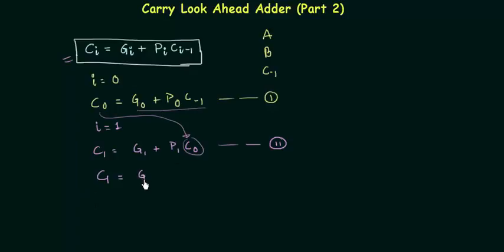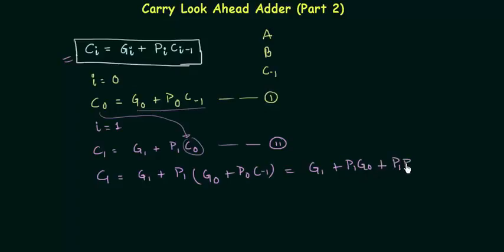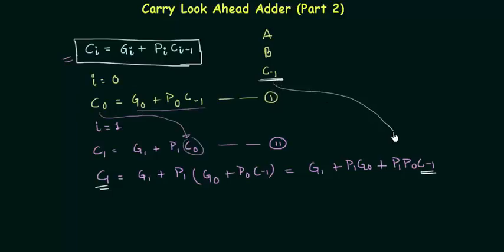Substituting, c1 equals g1 or p1 times (g0 or p0 times c-1). Opening the bracket: c1 equals g1 or p1g0 or p1p0 times c-1. Now c1 has only carry c-1 on the right-hand side, so we don't have to wait for any carry to be evaluated. Since c-1 is available at the beginning of addition, we can directly compute c1 without waiting for the first adder to evaluate c0.